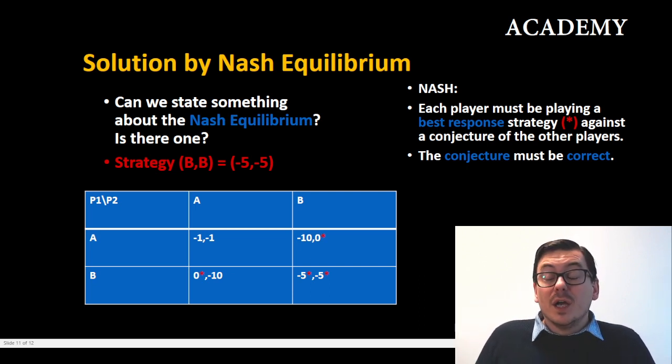So let's look if we are situated in minus five, minus five. Does anyone have an incentive to move from BB? Well no, not really, because if player one has chosen B and player two has chosen B, player two has no incentive to going to A because he would get minus 10, and the same account for player one. If he goes to A while player two has chosen B, he would just get minus 10 instead of minus five.